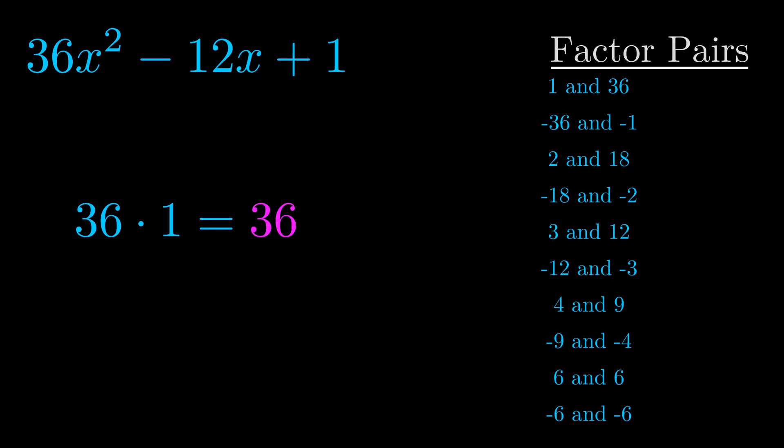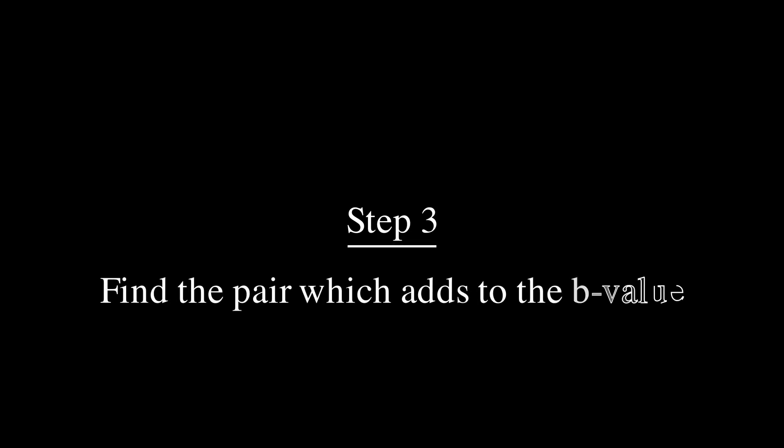Now once you have these factor pairs, the goal is to find which of these pairs adds to the b value. The b value is the coefficient on the x term.